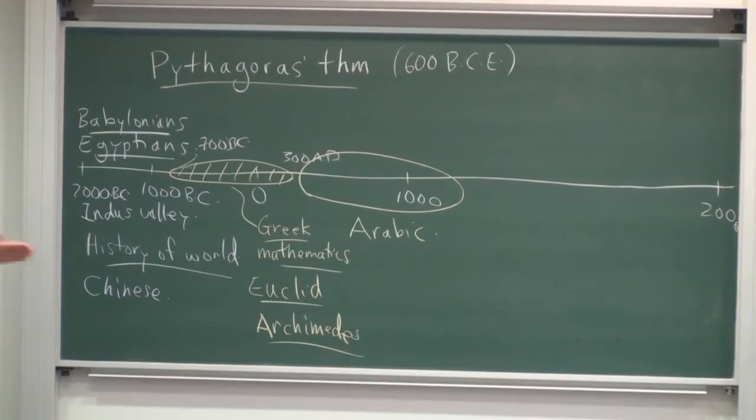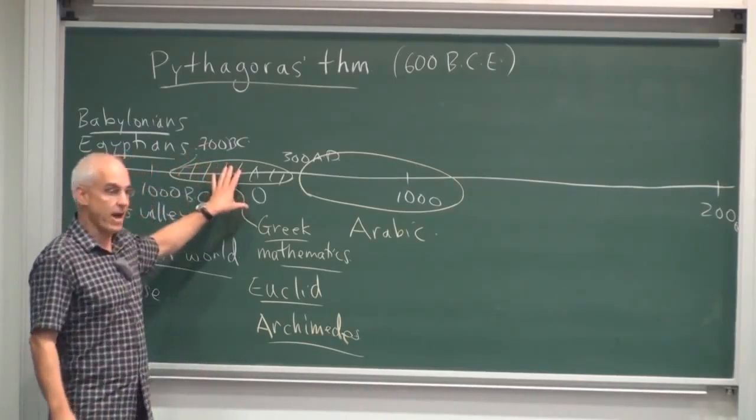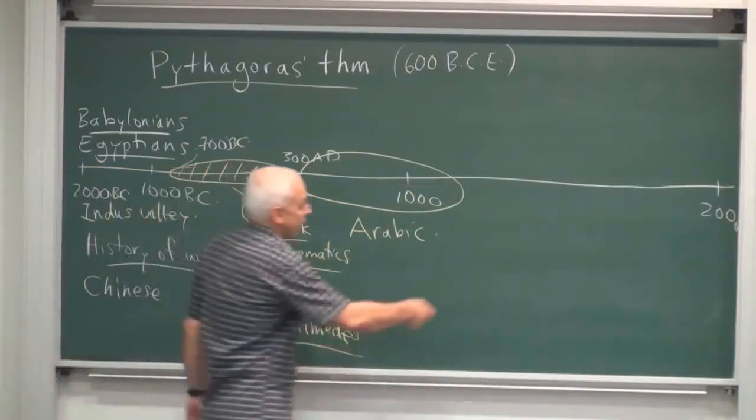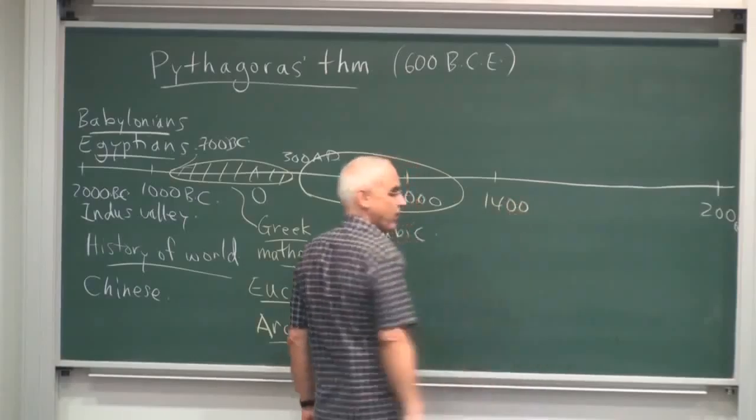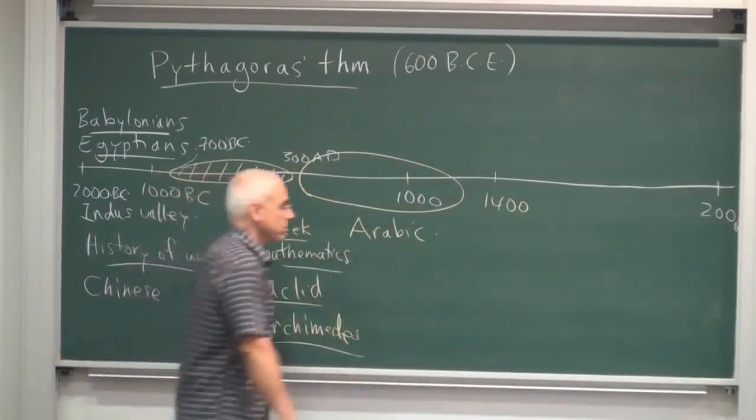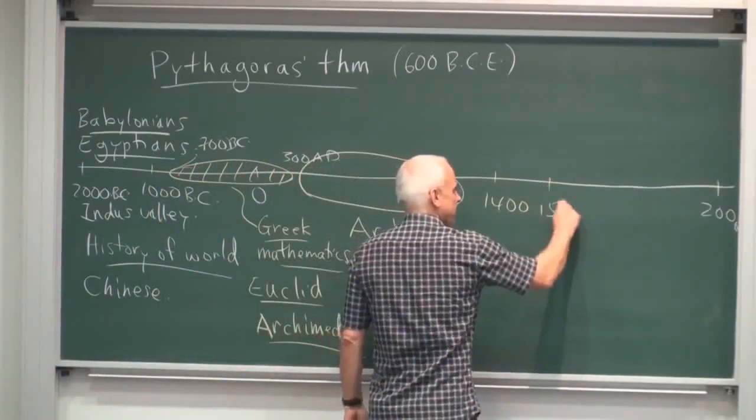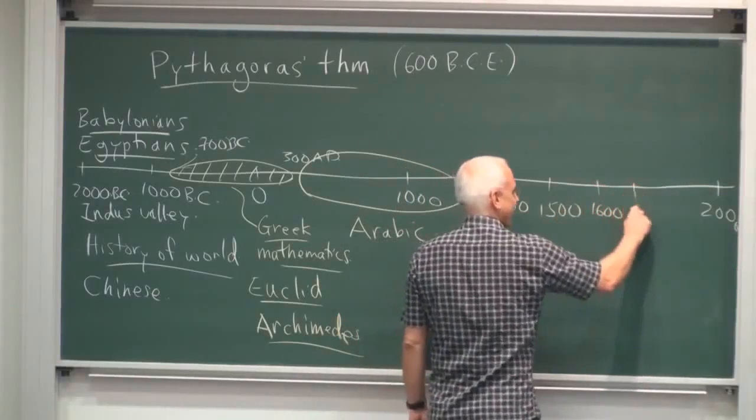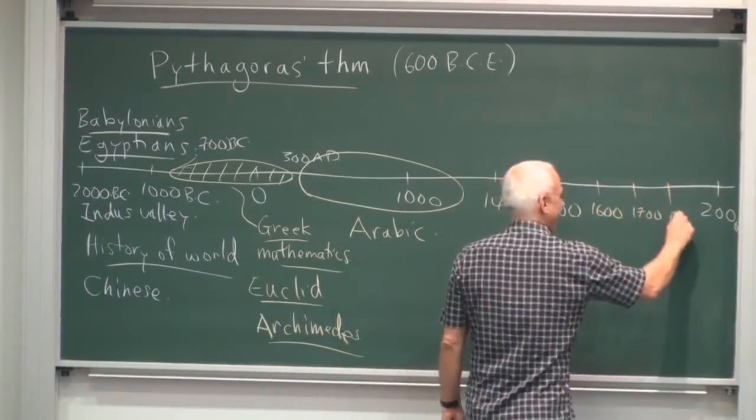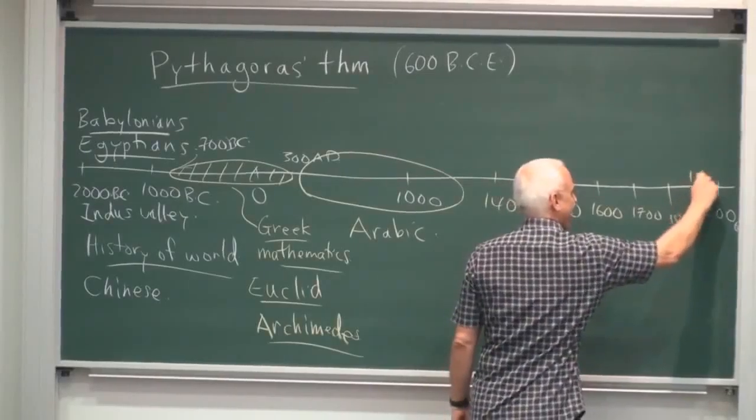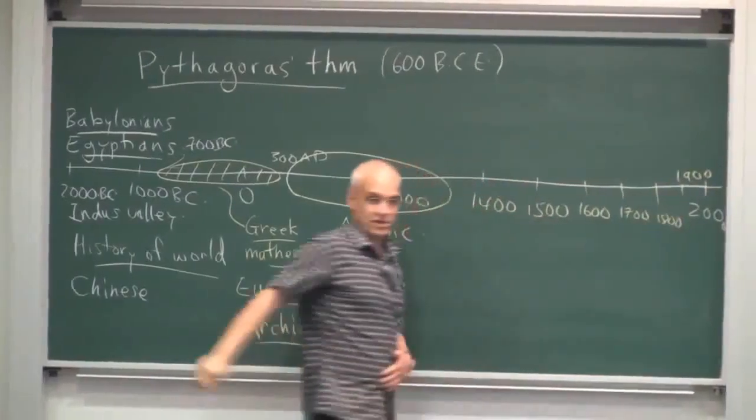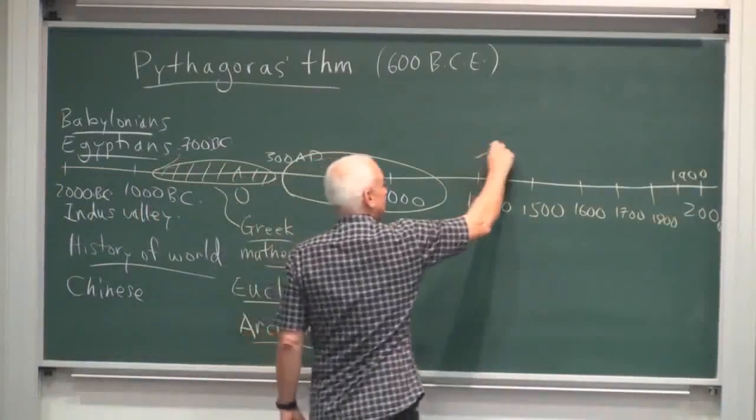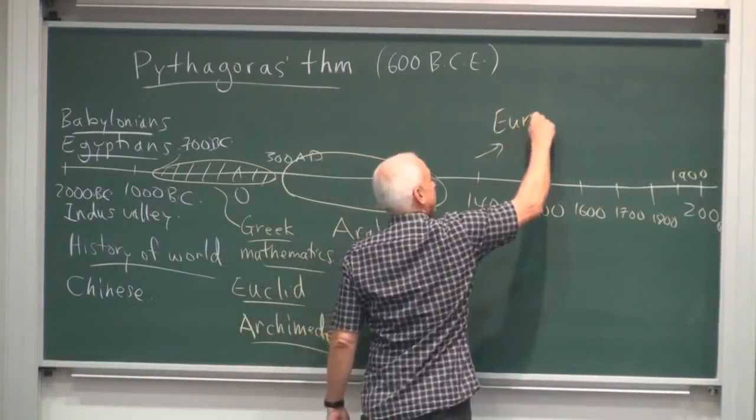And so the Arabs are a bridge from the Greek mathematics to the Europeans. And the Europeans start perhaps roughly around 1400s, 1400s, 1500s. And then there's a kind of explosion of activity in these years.